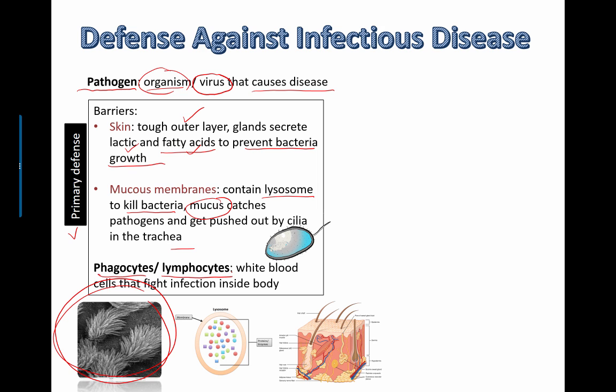Phagocytes and lymphocytes are different types of white blood cells — WBCs — and later you're going to see that there are many different categories of white blood cells. At this level, you need to know a few of them: phagocytes and lymphocytes. We're going to talk about phagocytes now; lymphocytes we'll talk about in the secondary line of defense a little bit later.